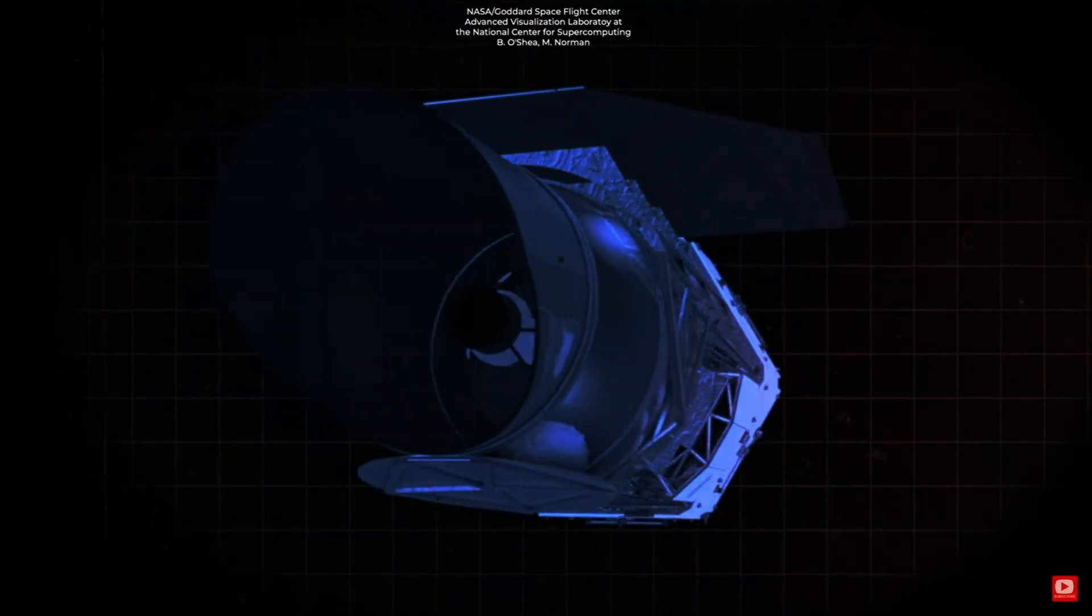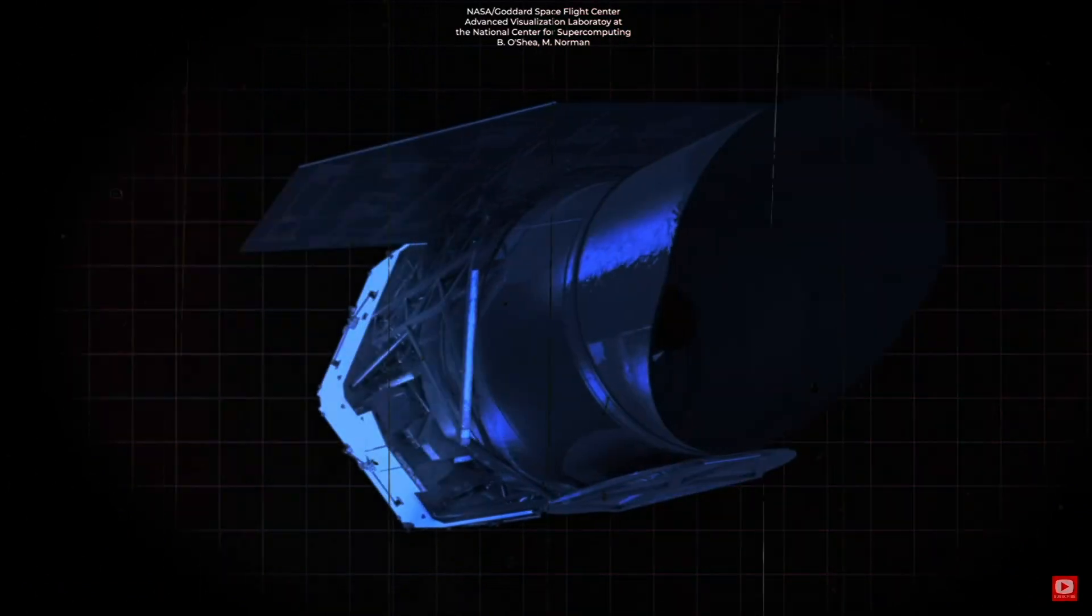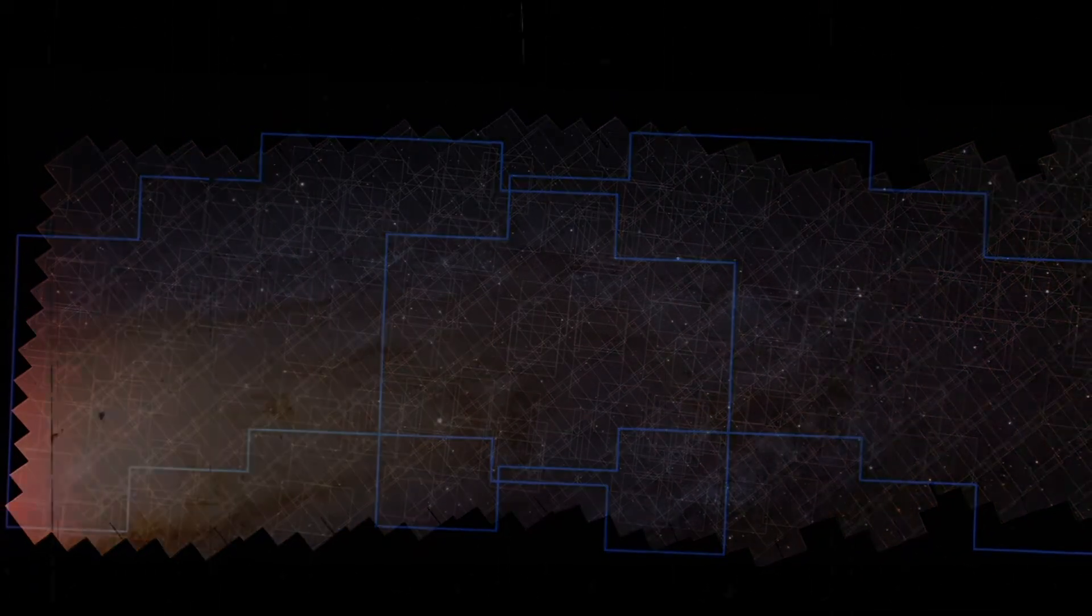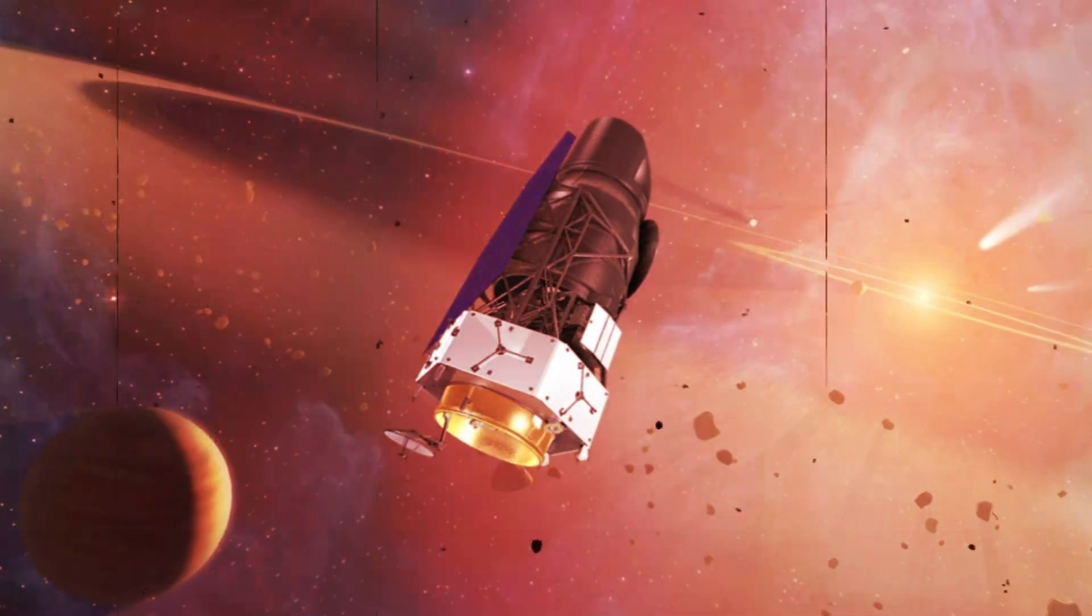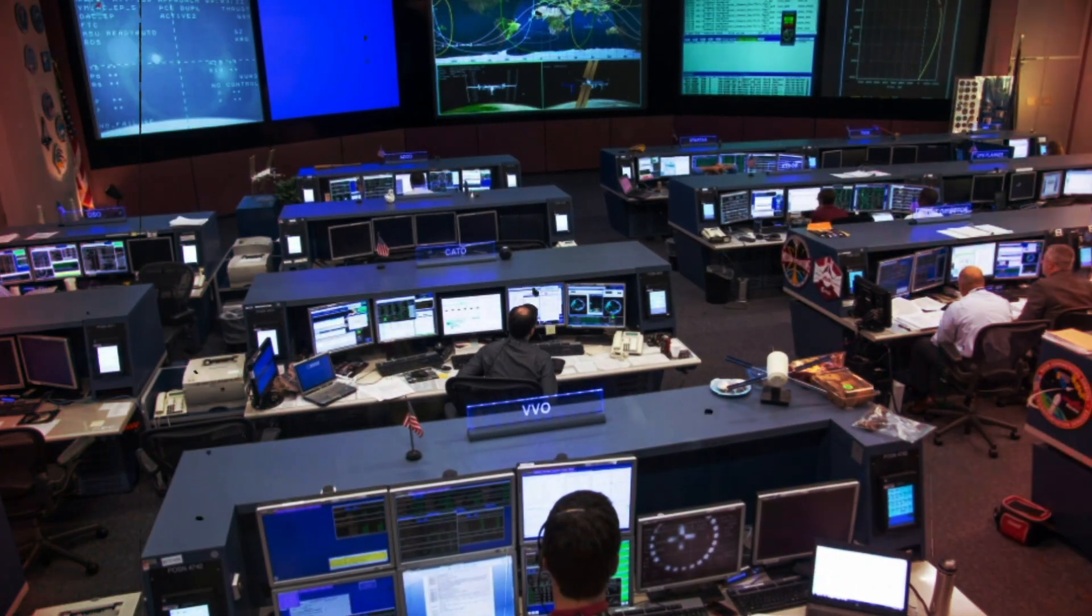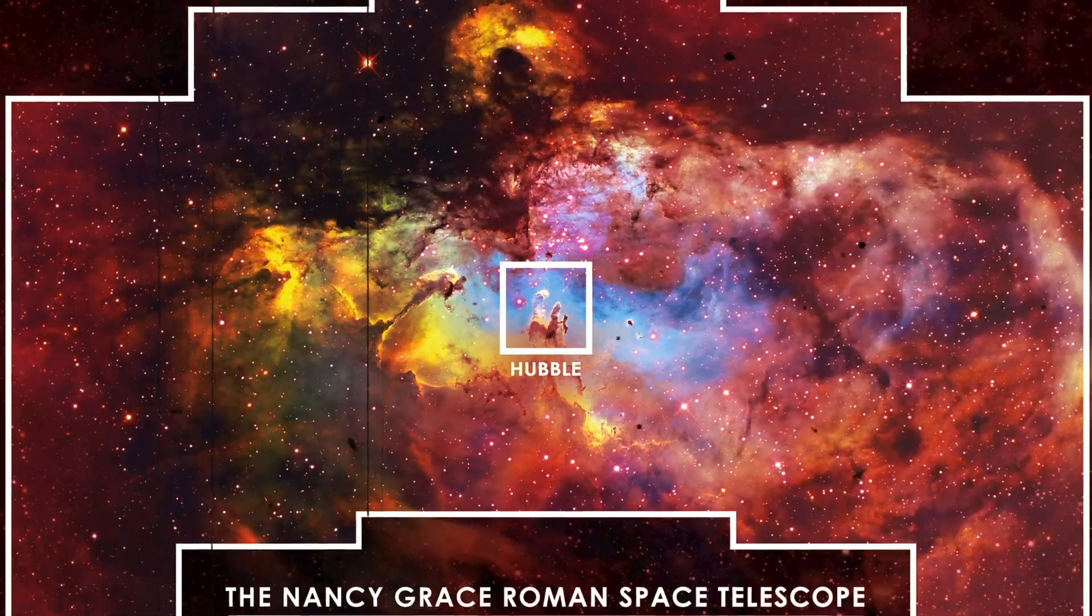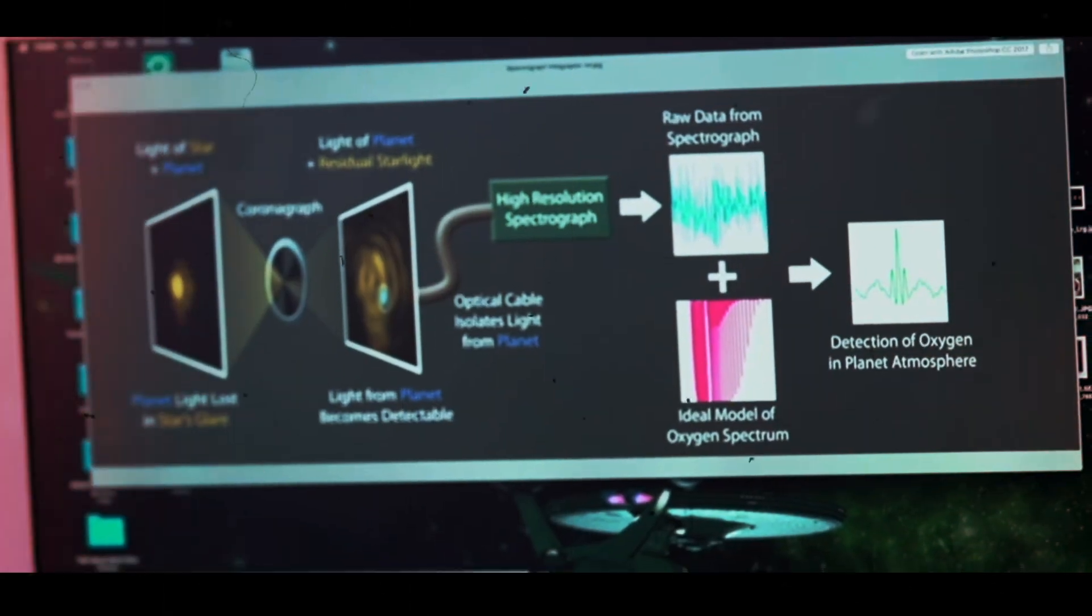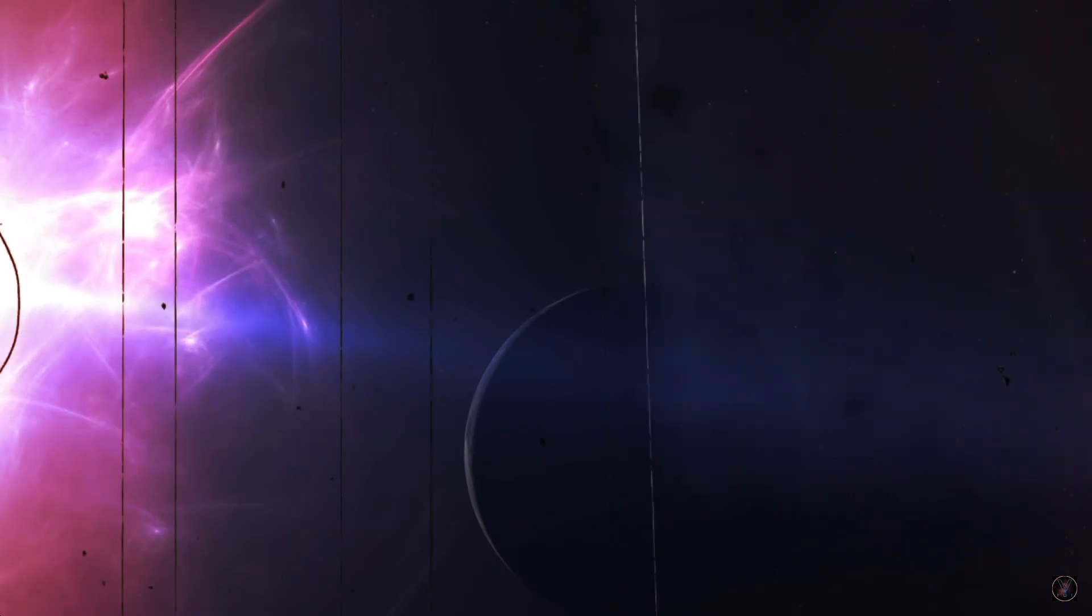The Nancy Grace Roman Space Telescope also incorporates advanced data processing and analysis techniques to maximize its scientific output. The telescope possesses advanced algorithms and computational capabilities, allowing for the efficient processing of vast observational data. This streamlined approach empowers scientists to extract valuable insights and make significant discoveries more effectively.